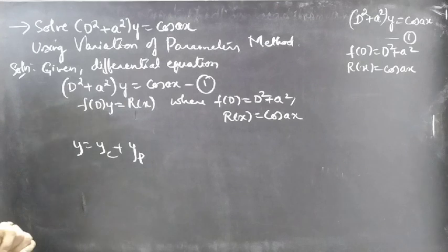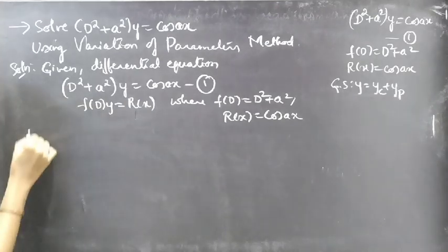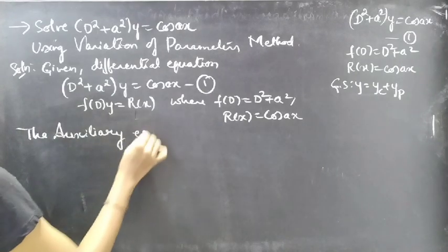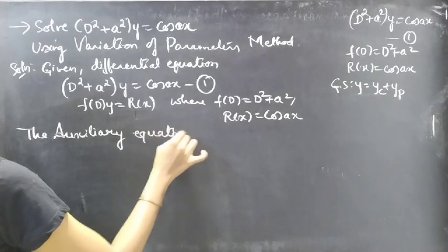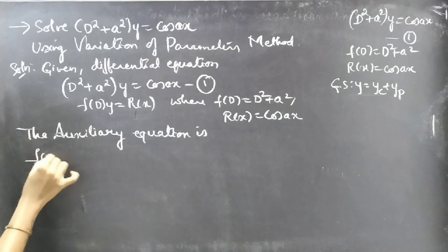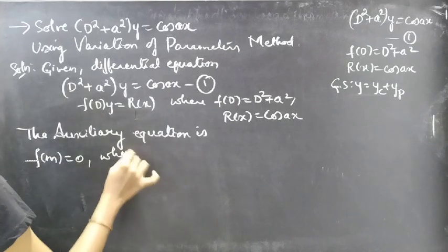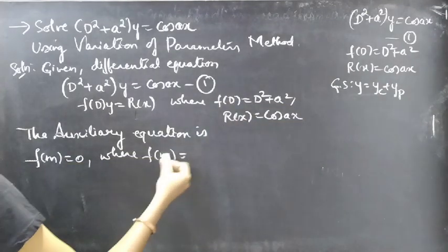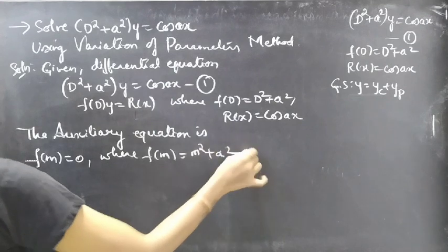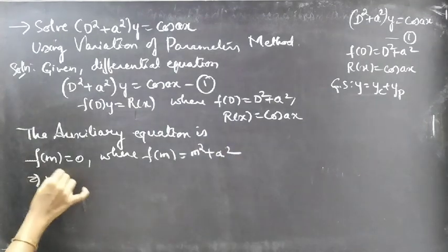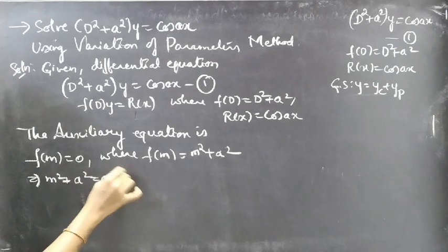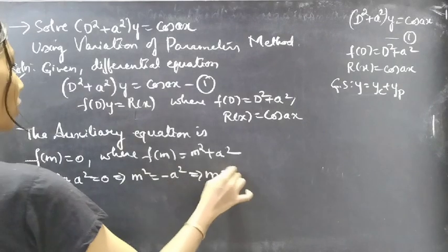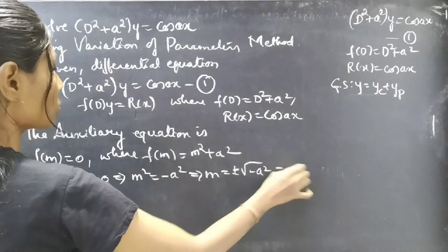Now the auxiliary equation is f of m equals 0. Since f of d equals d squared plus a squared, we replace the differential operator by m to get f of m equals m squared plus a squared. Setting this to zero gives m squared plus a squared equals 0, so m squared equals minus a squared, giving m equals plus or minus square root of minus a squared.